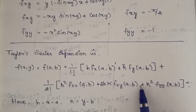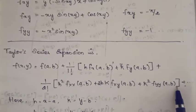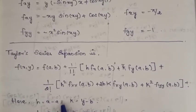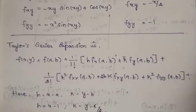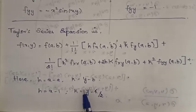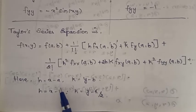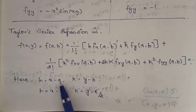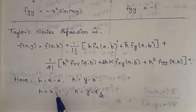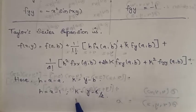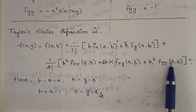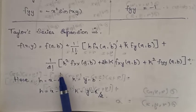Here h = x minus a = x minus 1, and k = y minus b = y minus π/2. Substituting a = 1, b = π/2 as our expansion point, we now substitute all the computed derivative values into the Taylor series expansion.